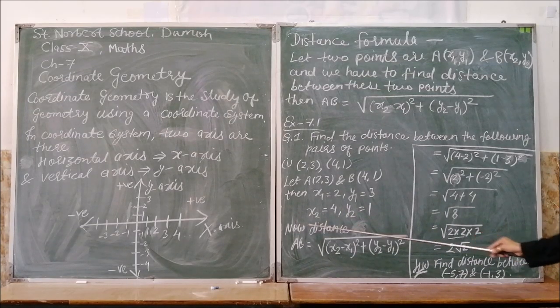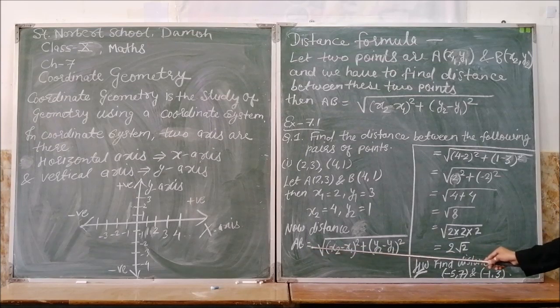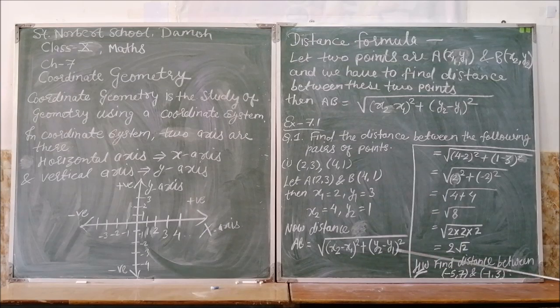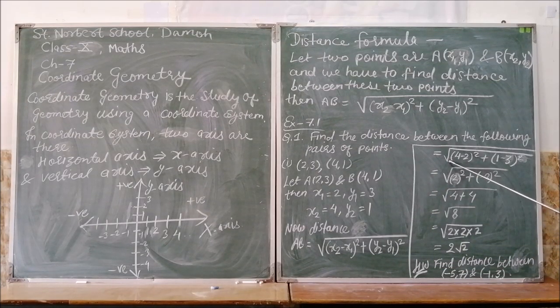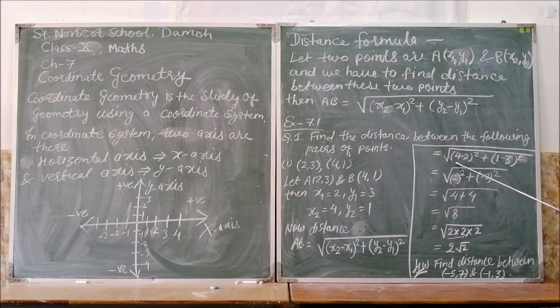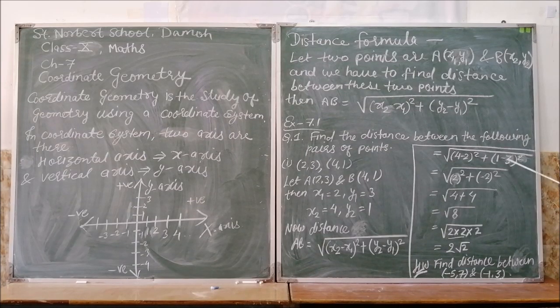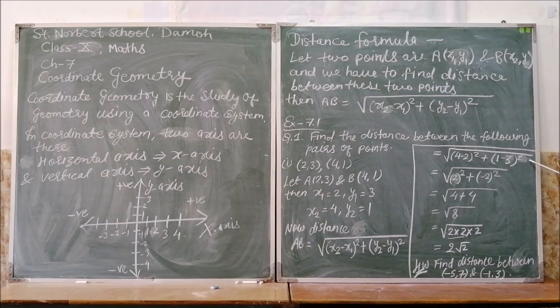Now by the distance formula, you will write AB equals under root (x2 minus x1) square plus (y2 minus y1) square. So keep the values. Under root, at place of x2 you will write 4, at place of x1 you will write 2, square. Plus, at place of y2 you will write 1 minus, at place of y1 you will write 3, square.